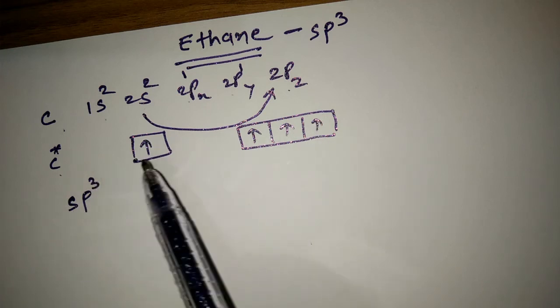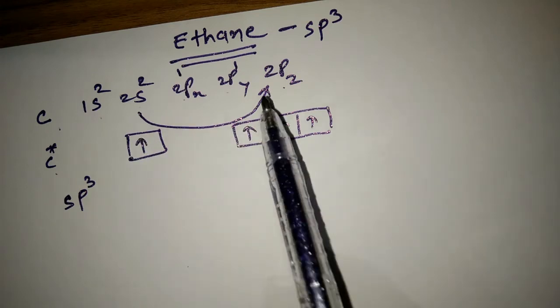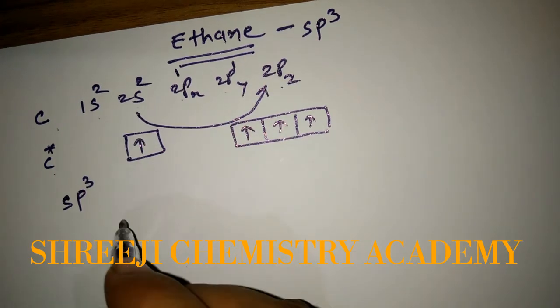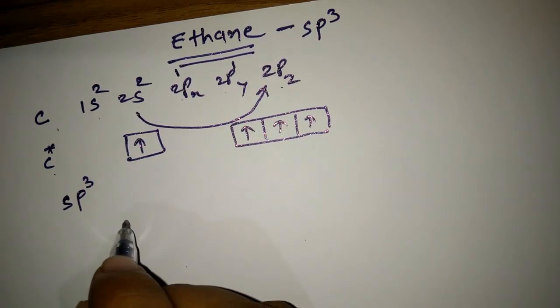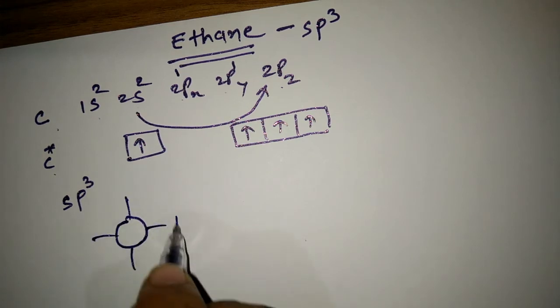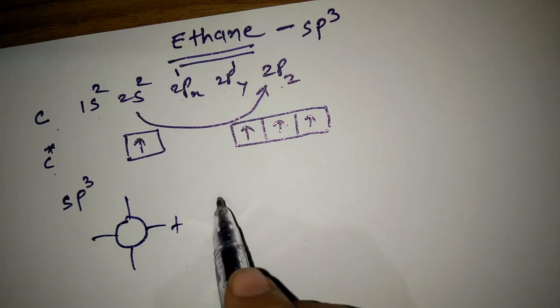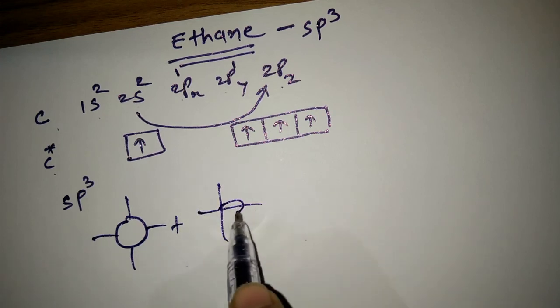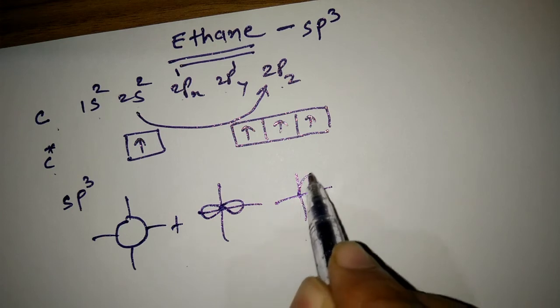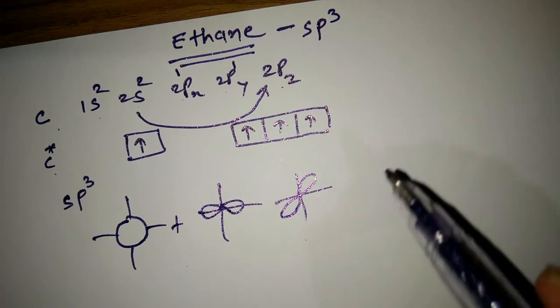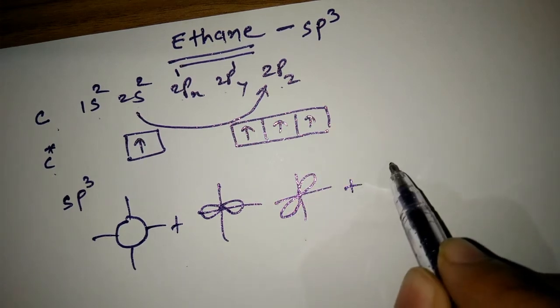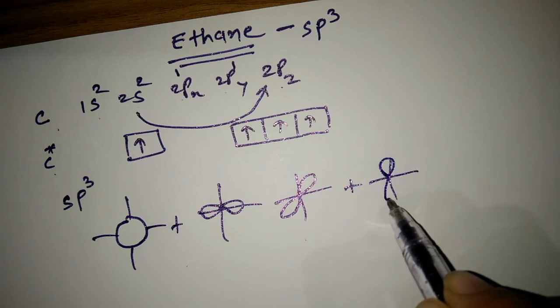Total four orbitals take part: one s orbital and three p orbitals. S orbital: spherical shape. P orbital: dumbbell shape. px, py, pz.